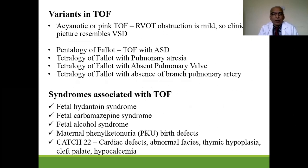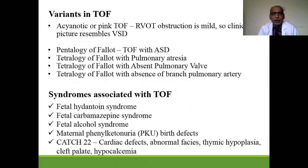There are variants of tetralogy of Fallot. One is acyanotic or pink Fallot, where right ventricular outflow obstruction is mild and the clinical picture resembles VSD. In pentalogy of Fallot, an ASD is added to the four components. There is also tetralogy of Fallot with pulmonary atresia, with absent pulmonary valve, and with absent branch pulmonary artery.